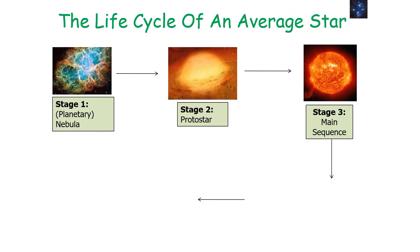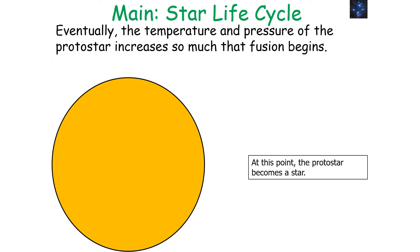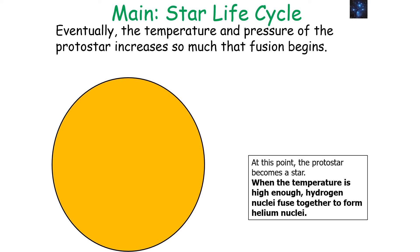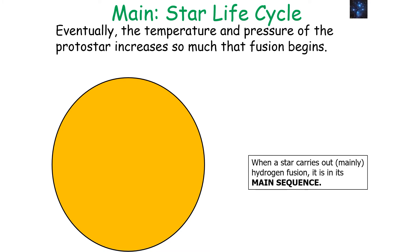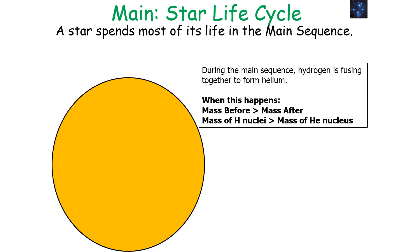So on the life cycle of an average star we have: stage one, the planetary nebula; stage two, the protostar; and stage three, the main sequence. Eventually the temperature and pressure of a protostar increase so much that fusion begins, and at this point the protostar becomes a star. When the temperature is high enough, the hydrogen nuclei fuse together to form helium nuclei. When a star carries out mainly hydrogen fusion, we say it is on the main sequence.